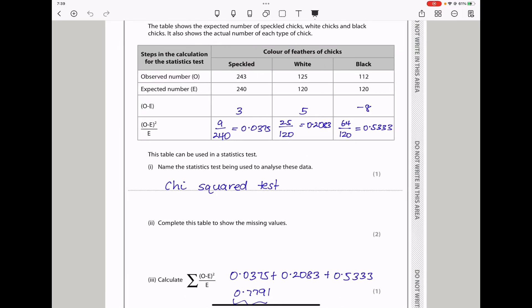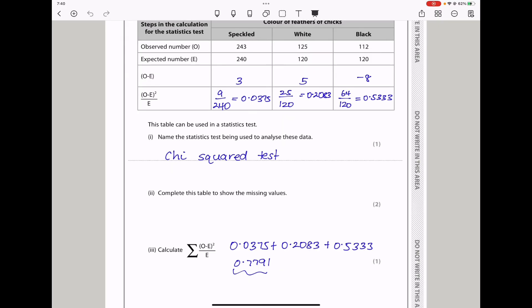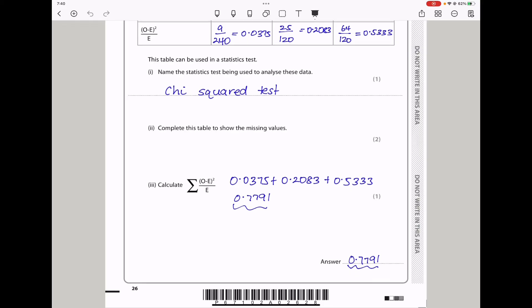This table can be used in a statistics test. Name the statistics test being used to analyze this data. This is called a chi squared test. Then here they say calculate that. This is quite easy, just get this value plus that value and that value, because this stands for summation sign. And I got 0.7791 as my final answer.